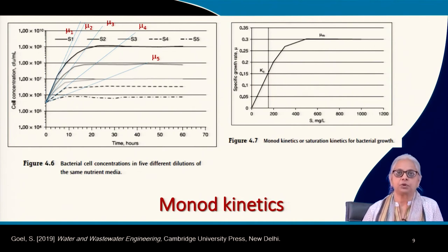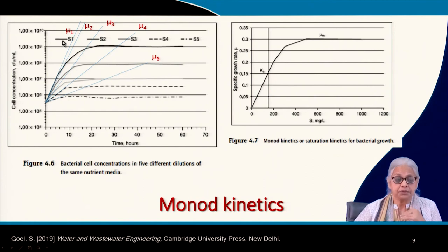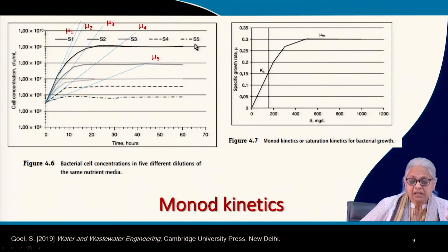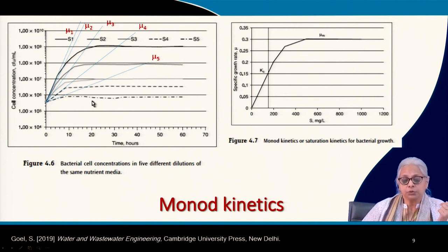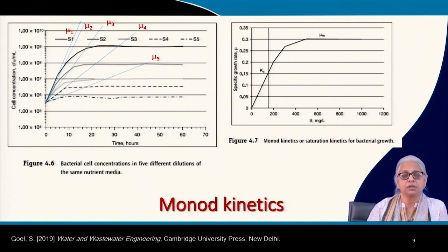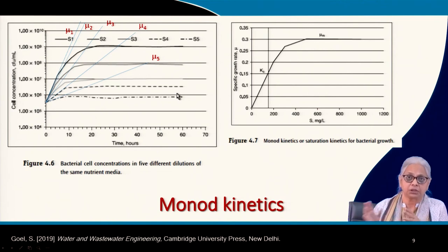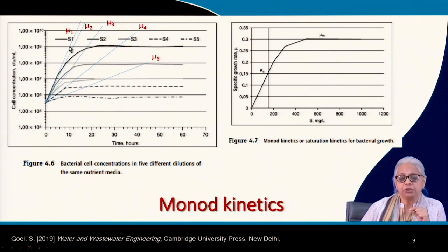Here is how we measure the parameters required for Monod kinetics for any growth-limiting substrate. You run a series of experiments with five different substrate concentrations S1 to S5, where S5 is the lowest and S1 is the highest concentration. On the y-axis is cell concentration; on the x-axis is time in hours. Each batch culture reaches stationary phase at a level that is a function of the substrate concentration.